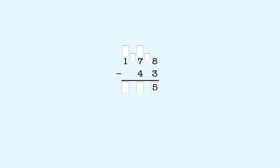Next, the tens place. 7 tens minus 4 tens is 3 tens, so we put 3 in the tens place in the answer. Last, the hundreds place. There's nothing to subtract from 1, so we bring down the 1. So 178 minus 43 is 135.